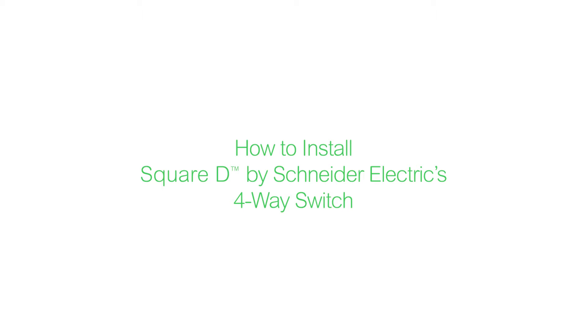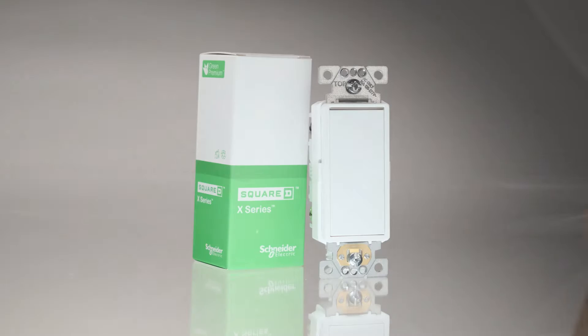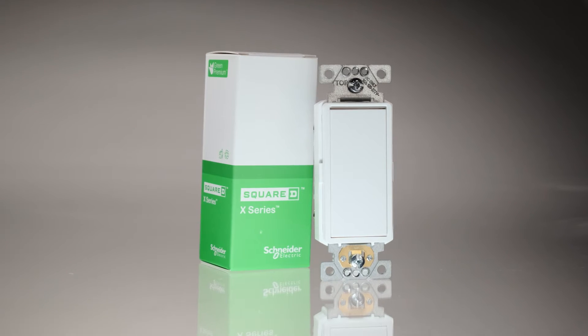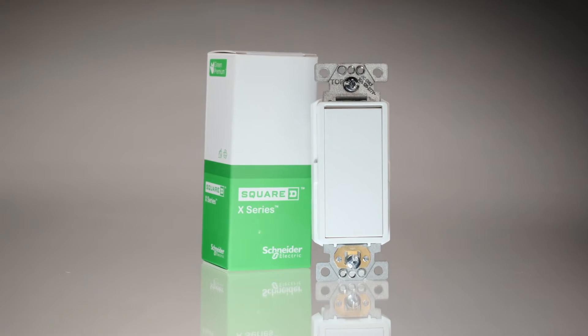This video will show you how to easily install Square D by Schneider Electric's 4-Way switch. These switches are typically used to control a light or device from more than two locations.